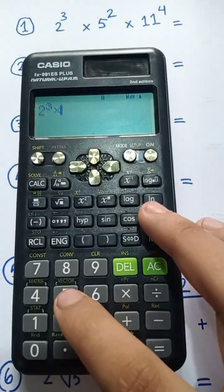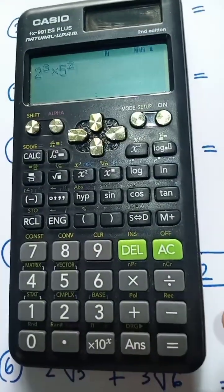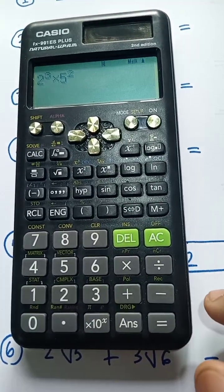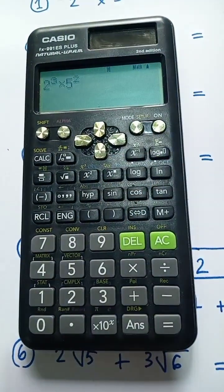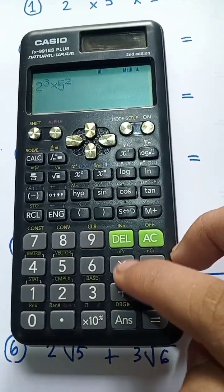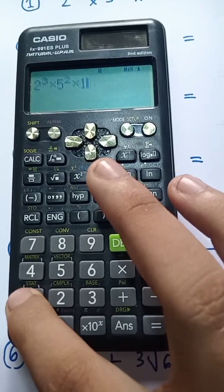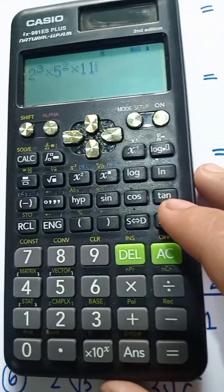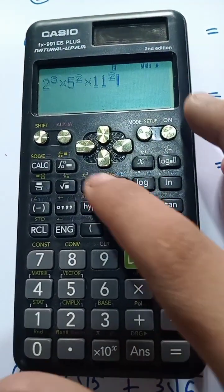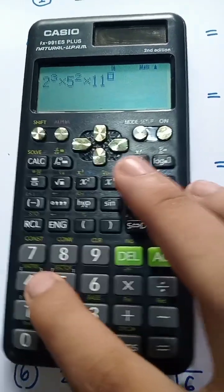5 squared is 5 power 2. We have a shift in the same way. Now we have 11 power 4. 11 power 4. Now we have 4.